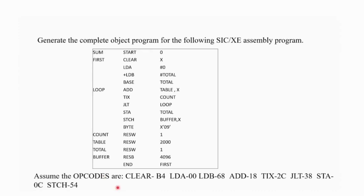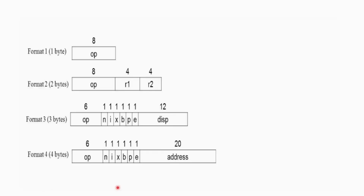To generate the object code, first we will calculate the location counter for each and every instruction. So before calculating the location counter, first let us understand what instruction format is. The instruction format in SIC consists of four different formats: Format 1, 2, 3, and 4. Each format is used to represent different types of instructions. Let's explore them one by one.